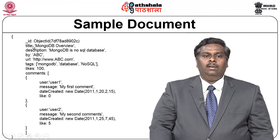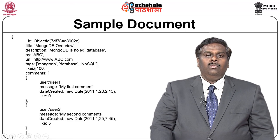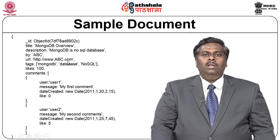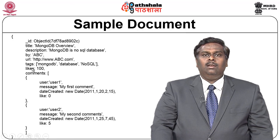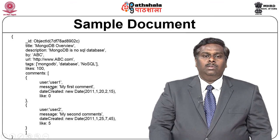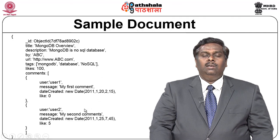Let us take a look at a sample document from a MongoDB perspective. Every document is associated with an ID — by default an ID is assigned, or if a user provides an object ID, that separate object ID is assigned to the document. Every document will have fields like title, description, author, URL, tags, likes, and comments given by various users. Each user comment is itself a nested document containing a user ID, the message, the date the comment was given, and the like count.